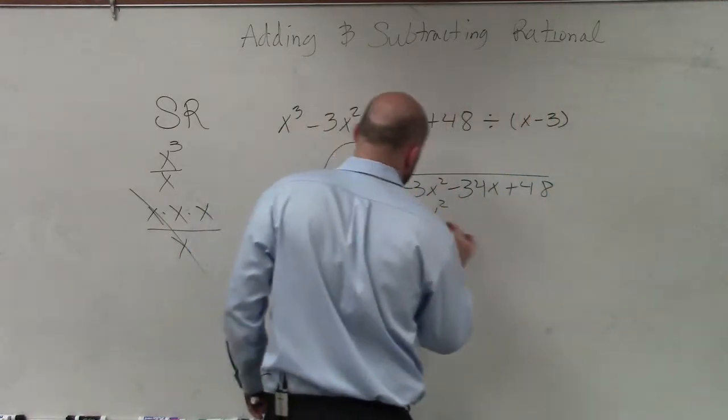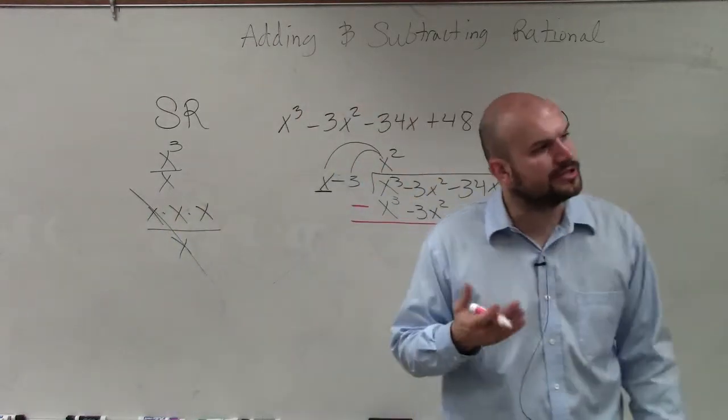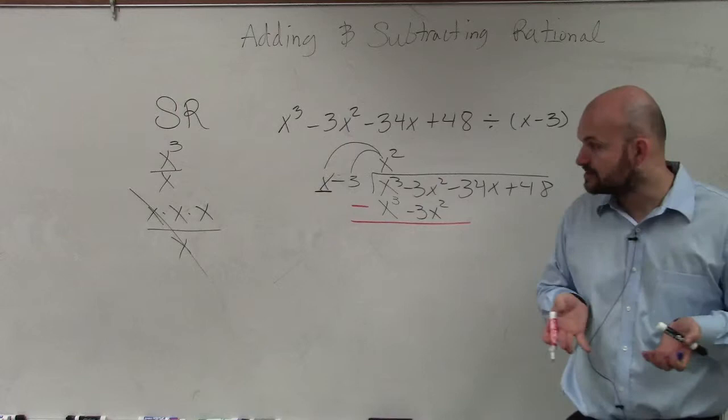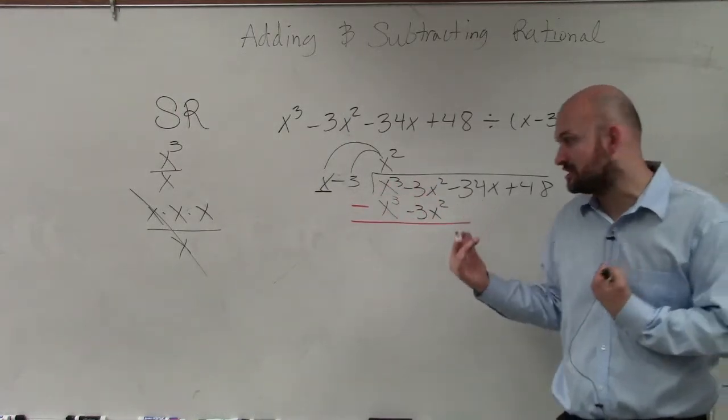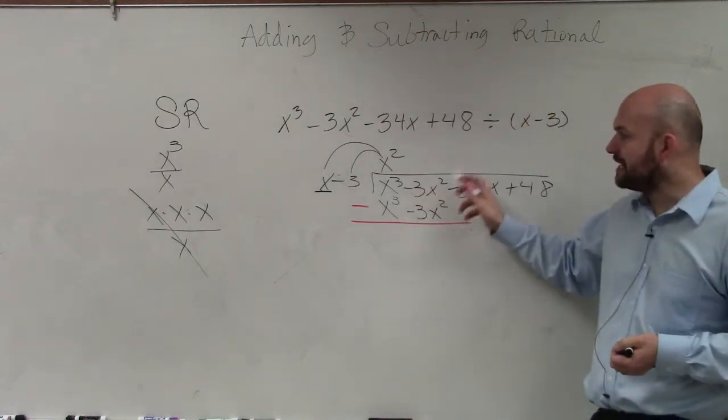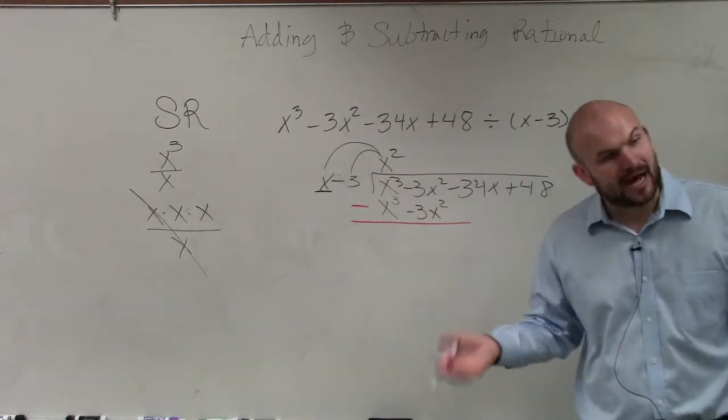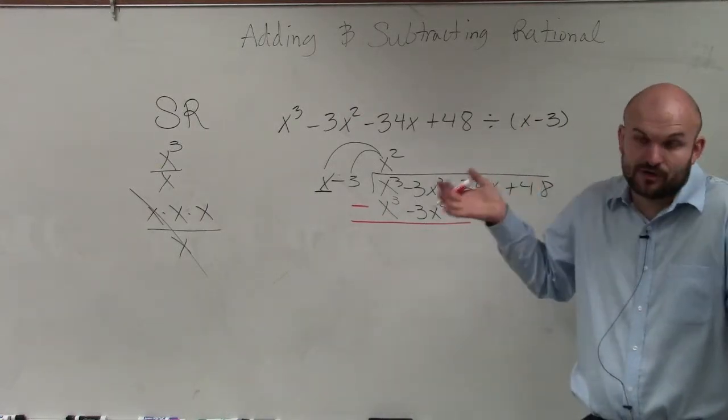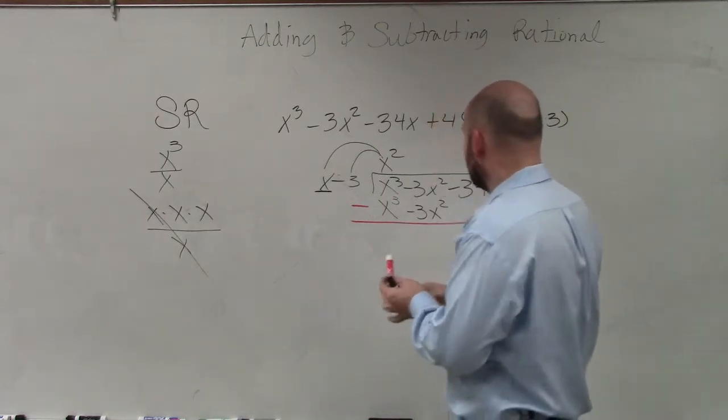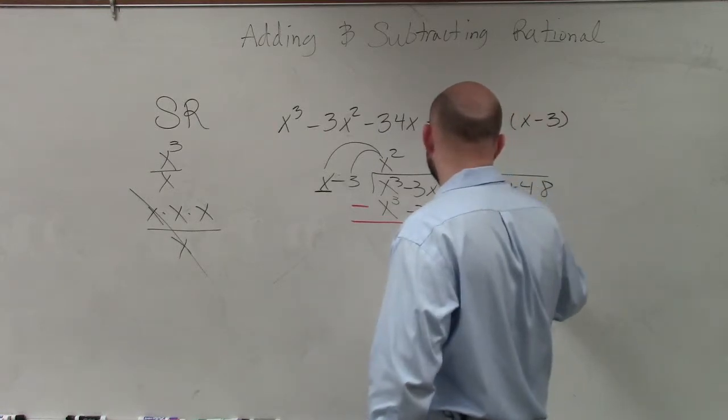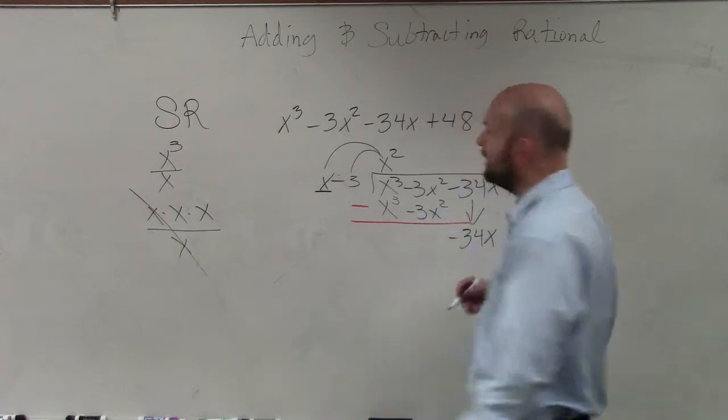Now, let me explain what we do next. Now, what we're going to do is we're going to subtract the rows. x cubed minus x cubed is 0x cubed, which is just 0. Negative 3x squared minus a negative 3x squared is now just going to be positive 0x squared, or 0x squared, which is just 0. So now what I need to do is bring down the next number. So I just bring down negative 34x plus 48. And again, ladies and gentlemen, we do the same operation.